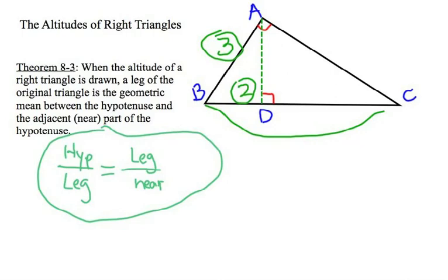Still, we should be able to find the entire hypotenuse. So, let's write our proportion, and remember what the theorem says, that the leg, which in this case is 3, is the geometric mean between the entire hypotenuse, which we will call X, and the near part of the hypotenuse created when we draw the altitude, that's 2.